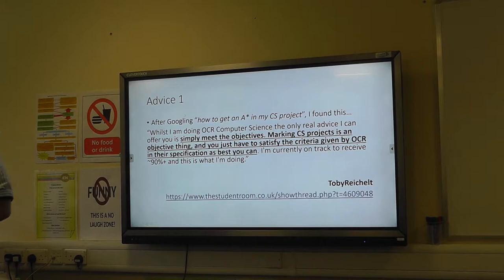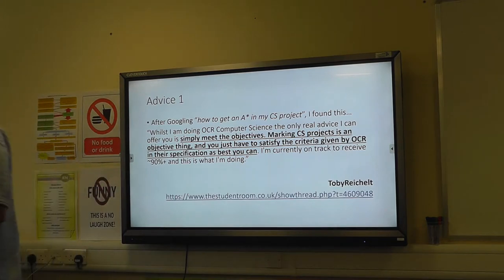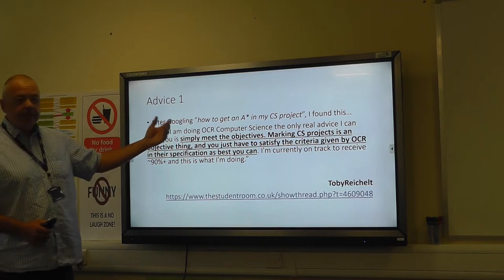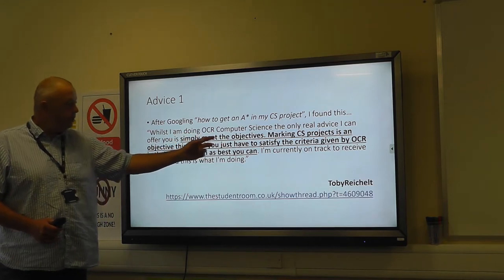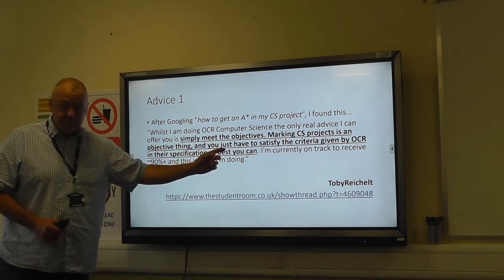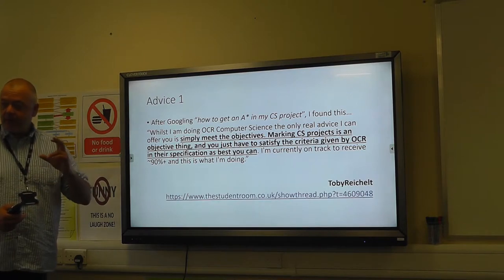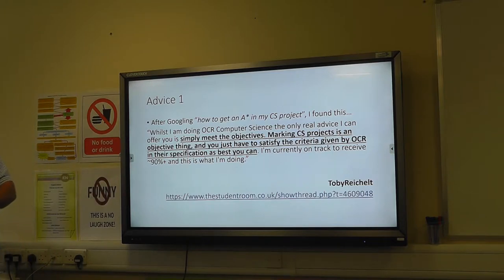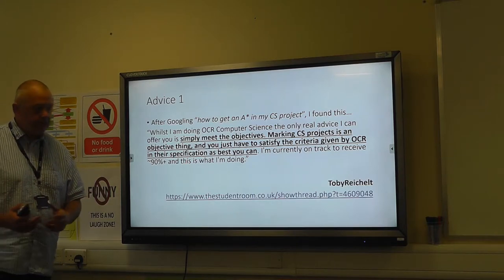First bit, which isn't quite to do with time management: I Googled 'how to get an A star in my computer science project' and I found this bit of advice. It comes from another student — not written by a teacher. Someone asked, 'how do I get an A star in my computer science project?' And the answer was: whilst doing OCR computer science, the only real advice I can offer is meet the objectives. I thought, yeah, that's a very, very good thing to do. Meet the objectives. And the objectives are all written in that document — H446/03 project — which is the first OCR link that comes up with all the analysis and everything else in it.